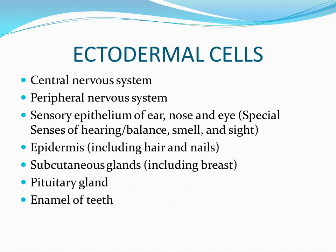Ectoderm cells develop into the peripheral nervous system. They develop into the sensory epithelium of the ear, the nose, and the eye. Eventually it gives us parts of the epidermis and the integumentary system such as the hair and nails, and also the subcutaneous glands — of which we mentioned several earlier — including the glands of the breast.